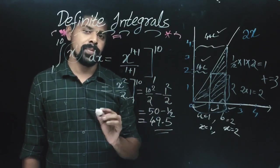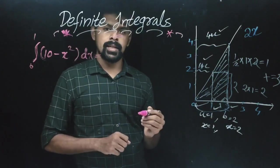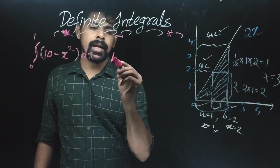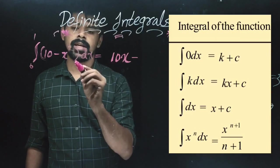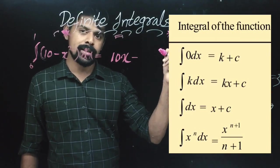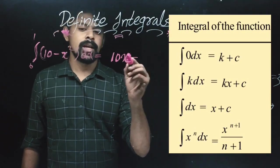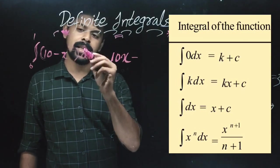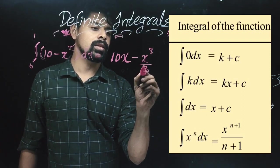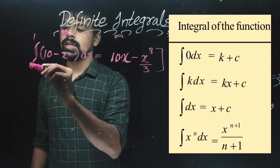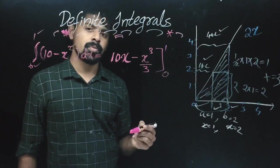The next example: integral from 0 to 1 of (10 minus x squared) dx. The constant 10 integrates to 10x. We integrate x squared using the power rule: x raised to n gives x raised to n+1 divided by n+1. So x squared becomes x raised to 2+1 divided by 2+1, which is x cubed by 3. Limits are 0 to 1.